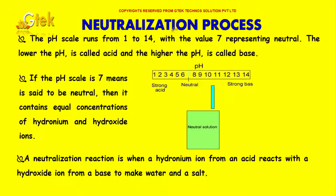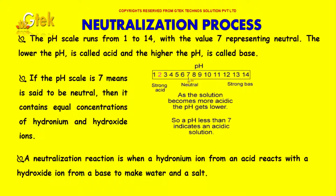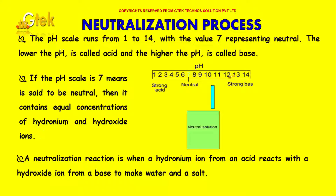Let's discuss the neutralization process. The pH scale runs from 1 to 14, with the value 7 representing neutral. The lower the pH value, it is called acid, and the higher the pH value is called base. If the pH scale is 7, it is said to be neutral, meaning it contains equal concentration of hydronium and hydroxide ions.